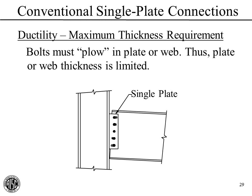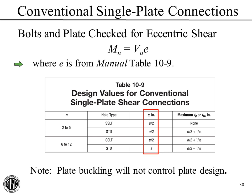For limit states, we first check the bolts and the plate for eccentric shear. The eccentricity is given in Table 10-9—it's very often A divided by 2. For short slots, it's always A divided by 2. So our eccentricity is usually going to be half the A dimension.